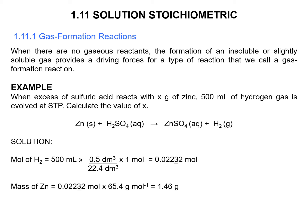When excess sulfuric acid reacts with x grams of zinc, 500 ml of hydrogen gas is evolved at STP. Calculate the value of x. This example comes with the equation: zinc solid and sulfuric acid in aqueous solution produce zinc sulfate and hydrogen gas. So the gas involved is hydrogen.